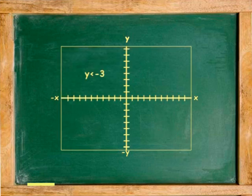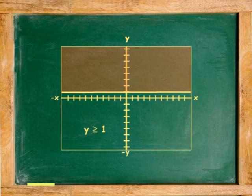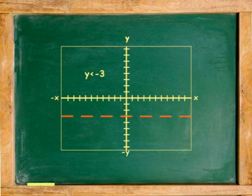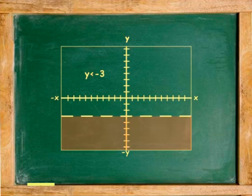Another example, graph the inequality y is less than negative 3. Again, graphed in two dimensions, an inequality with only one variable is either vertical, x only, or horizontal, y only. In this case it is horizontal, passing through point y equals negative 3. Because the y in the inequality indicates less than, the solution area is found below the dashed line.